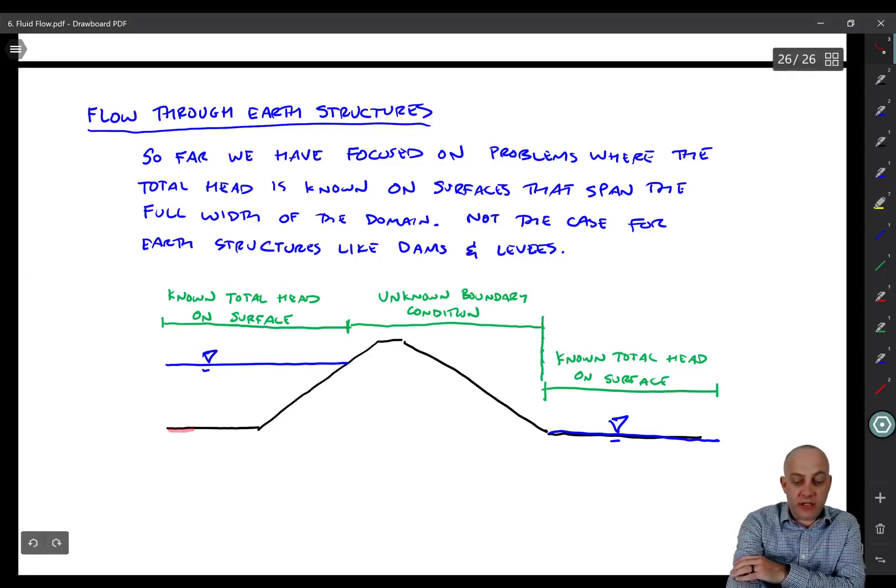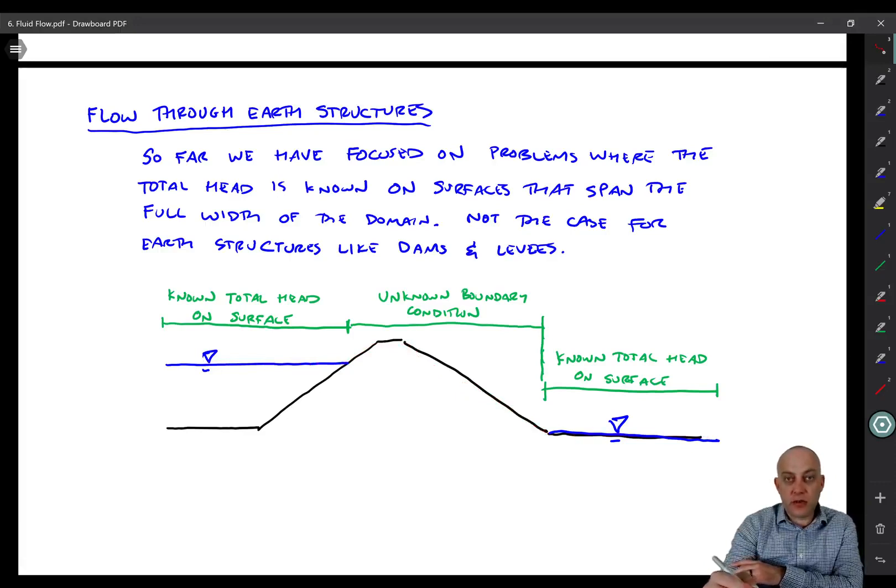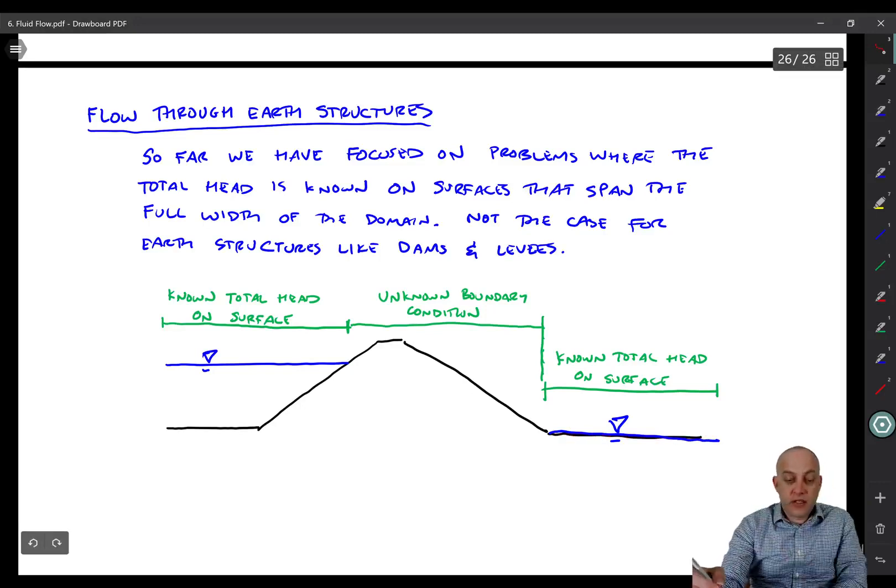Let's say that we have a levee here and there's some known water elevation on one side of that levee. And let's say that water elevation is always there so that we've reached a condition of steady state flow through the levee. And then on the right side we know that the water table is right at the ground surface elevation. Well, we don't know the total head in this region here because we don't know the position of the phreatic surface.